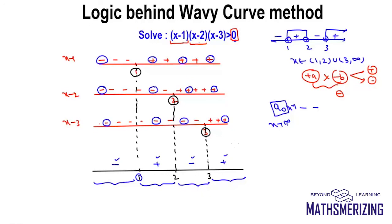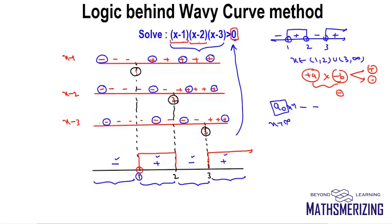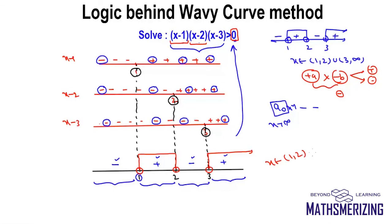Going back to our question: we need the product of these three expressions to be greater than zero, which is positive. The product is positive in the interval (1, 2) and in (3, infinity). I cannot take values of x that make it zero, so I exclude 1, 2, and 3. The answer is x belongs to (1, 2) union (3, infinity). That is the logic behind the wavy curve method.